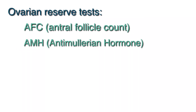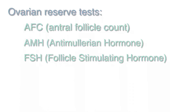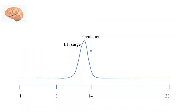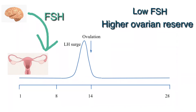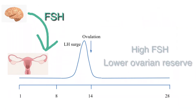The last test for ovarian reserve is cycle day 2 to 4 FSH. Each month at the beginning of the cycle, the brain produces FSH, which stands for follicle stimulating hormone. FSH will then travel through the bloodstream and reach the ovaries and stimulate the ovaries to grow and mature a follicle and the egg within it. This follicle will eventually ovulate a mature egg. By looking at the FSH at the beginning of the cycle, we can determine how hard the brain has to work to stimulate the ovary. We don't want the brain to be working too hard, and therefore we want the FSH to be low. If the FSH is high, usually above 10 to 12, that tells us the brain is working too hard and ultimately reflects a lower ovarian reserve.